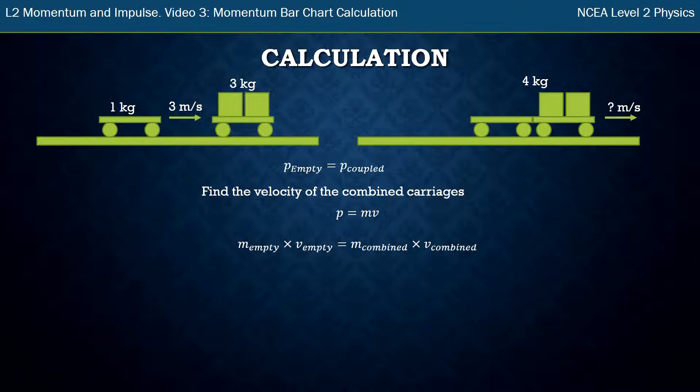Now with these labels in here, the little empties and little combines, it does look a little bit cluttered, but because we have multiple masses in this equation and we have different velocities, you've really got to label them. Subscripts in physics are the little labels down the bottom to help us distinguish which one's which.